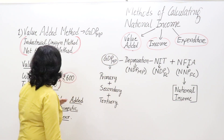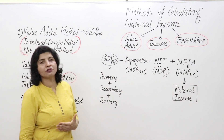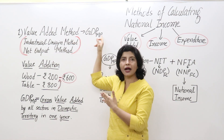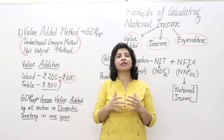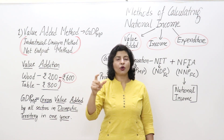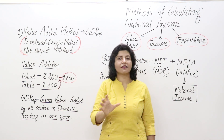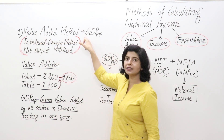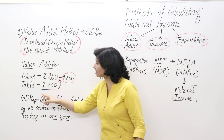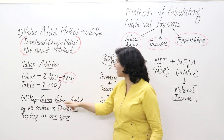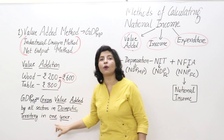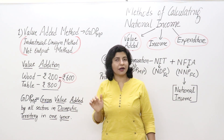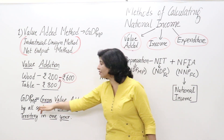In the value added method we measure GDP at market price. When we produce all the goods and services we sell them in the market, and then we come to know the final value of all goods and services produced in the economy. The definition is: gross value added by all sectors in domestic territory in one year is known as GDP — that is, Gross Domestic Product at Market Price.